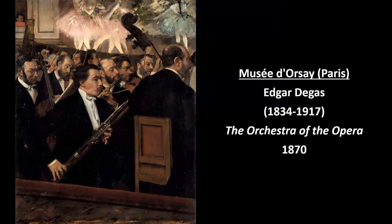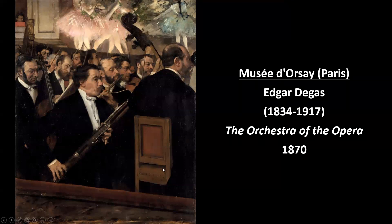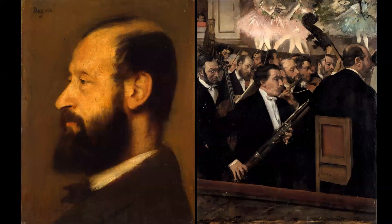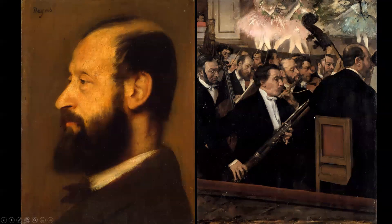You frequently see friends of Degas popping up in paintings he made. This is one of his most well-known works — not at the Met, but at the Musée d'Orsay in Paris — 'The Orchestra of the Opera.' His buddy Joseph appears right here in the painting. He was a flutist and later became the concert master of the Paris Opera — a very important individual in the music scene of Paris. Degas would frequently include friends and even family members in paintings like this.